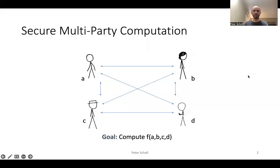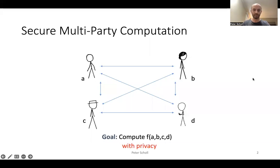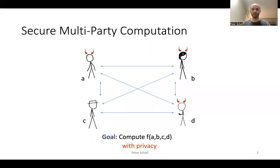In secure multi-party computation, a set of parties who each have some private input want to jointly compute some function f across all of their inputs, while preserving privacy of their inputs. In this talk, I'm going to focus on the dishonest majority setting, where the majority of these parties may be corrupted by the adversary, potentially maliciously.